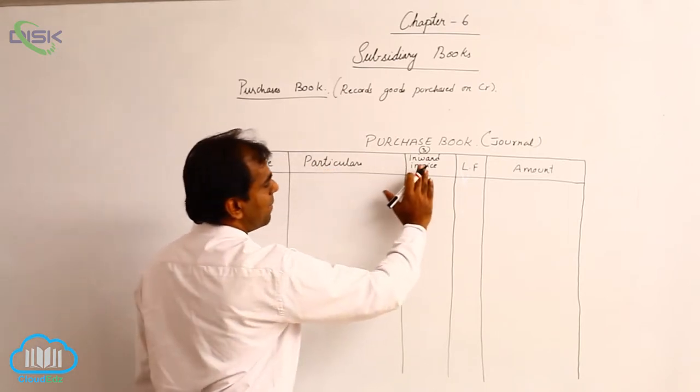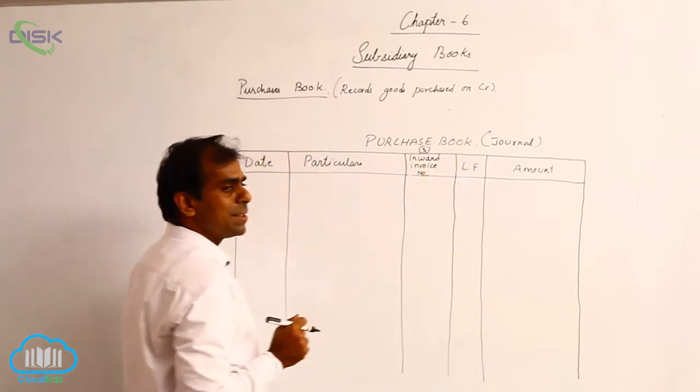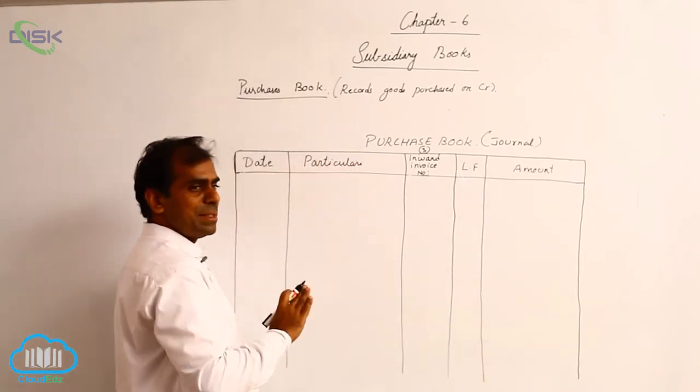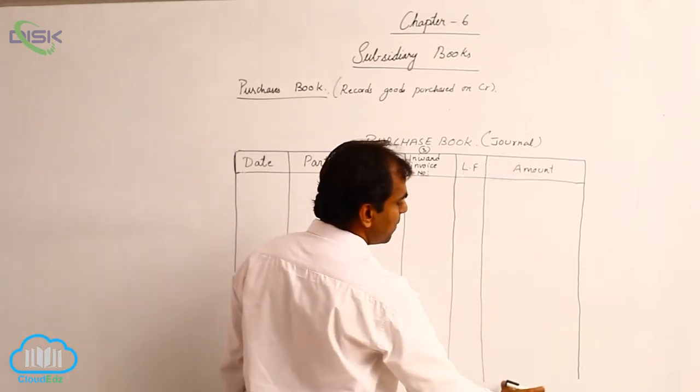We have an extra one, inward invoice number column here. Then LF, that is ledger folio. We have only one amount column. In simple journal we have two amount columns. Here we have only one amount column.